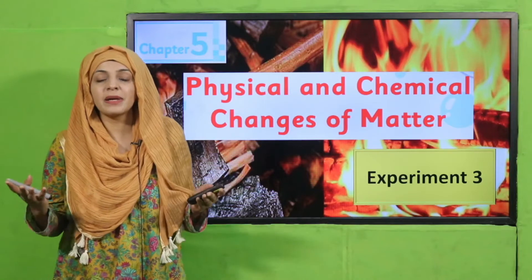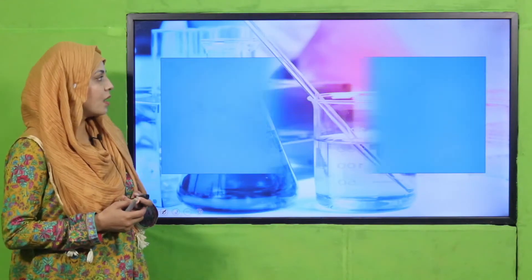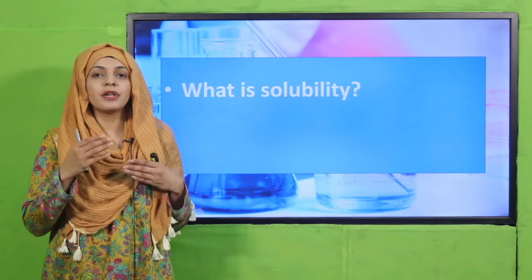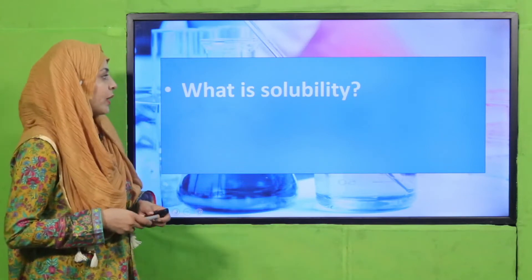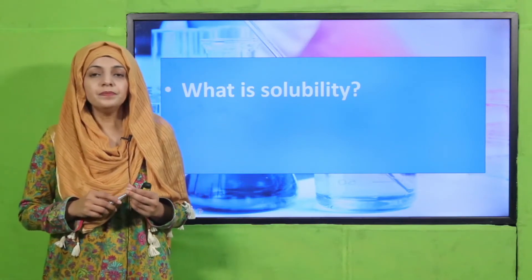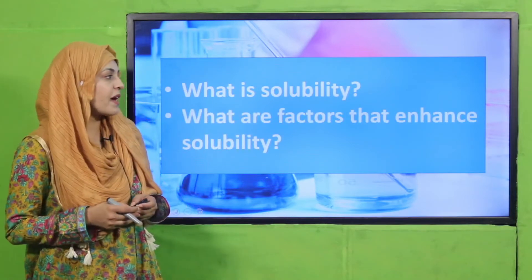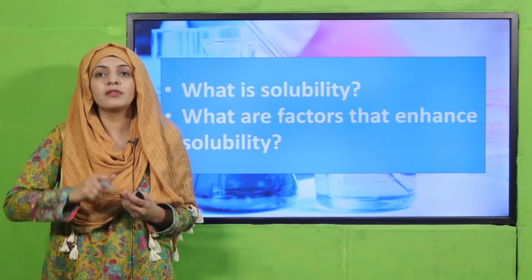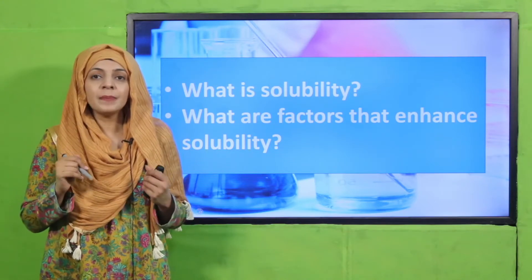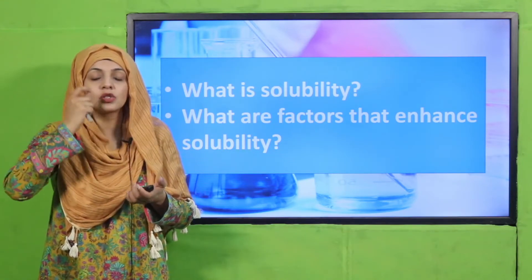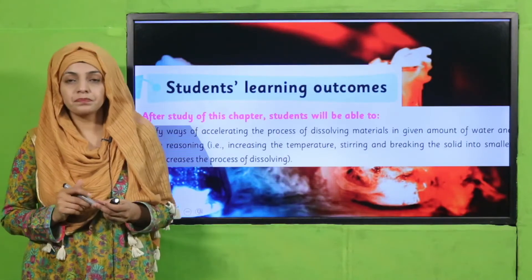Today we are going to do experiment number three from your Science 5 books. Let's start with a recap. In the previous lecture, we discussed how we dissolve different solutes into a solvent, and we discussed solubility and how it can be increased. Solubility is the dissolving of solute into a solvent at a given temperature. Solubility can be increased by increasing temperature, breaking the solute into smaller particles, and by stirring.